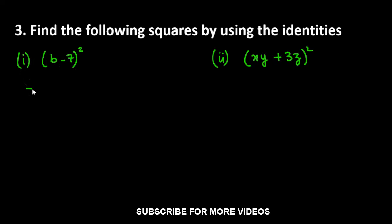In the first part, you can see that we have subtraction sign between these two numbers, b and 7. This means which identity you will use? a minus b whole square.